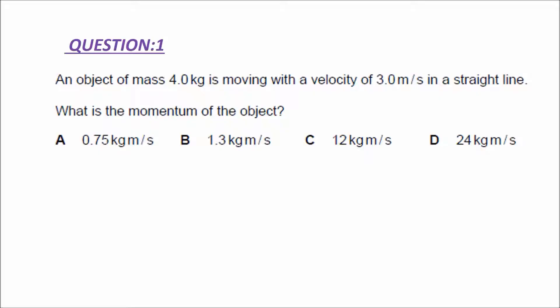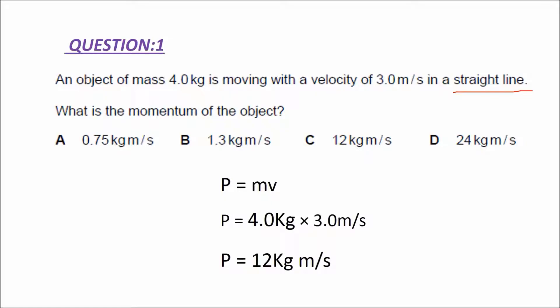Let us discuss the first question. An object of mass 4.0 kilogram is moving with a velocity of 3.0 meter per second in a straight line. What is the momentum of the object? The momentum formula is mass times velocity. Substituting the values, we get 12 kilogram meter per second. So the answer is C.